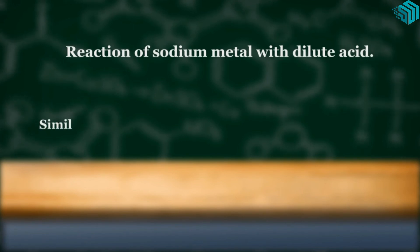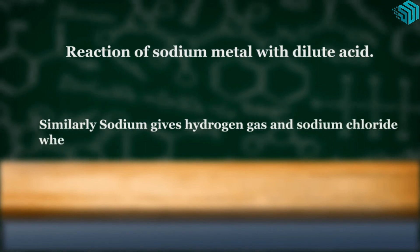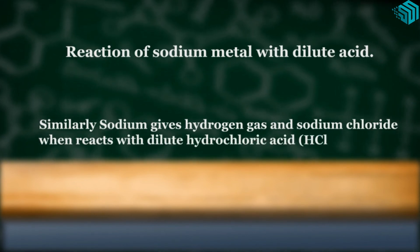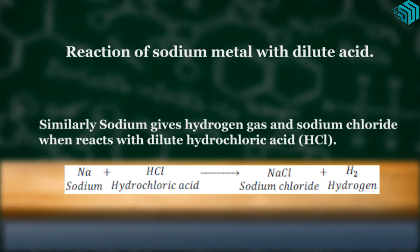Reaction of sodium metal with dilute acid. Similarly, sodium gives hydrogen gas and sodium chloride when it reacts with dilute hydrochloric acid. Sodium plus hydrochloric acid gives us sodium chloride plus hydrogen.